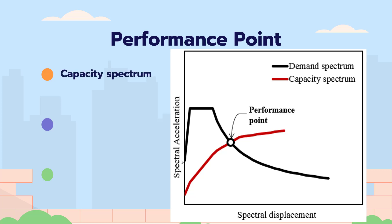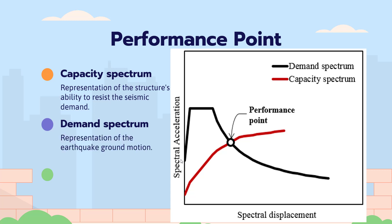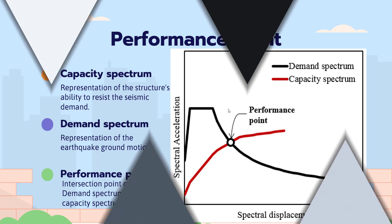As you can see here, the red curve is called the capacity spectrum. This curve represents the structure's ability to resist seismic demand. And the black curve is called demand spectrum, which represents the earthquake ground motion. Performance point is the intersection point of demand spectrum and capacity spectrum.